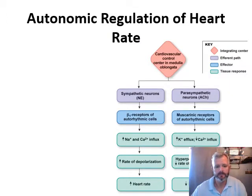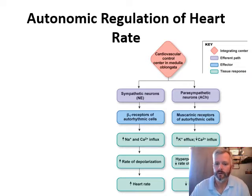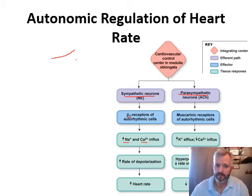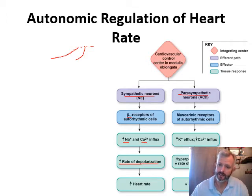The first factor we can change for cardiac output is heart rate, and what we're regulating are those autorhythmic cells. With sympathetic input, norepinephrine acts on beta-1 receptors on our autorhythmic cells, increasing sodium and calcium influx. Remember, our pacemaker potential rises like a ramp — if we increase sodium and calcium influx, we can get up to threshold much quicker. The rate of depolarization is much faster, and that increases heart rate.